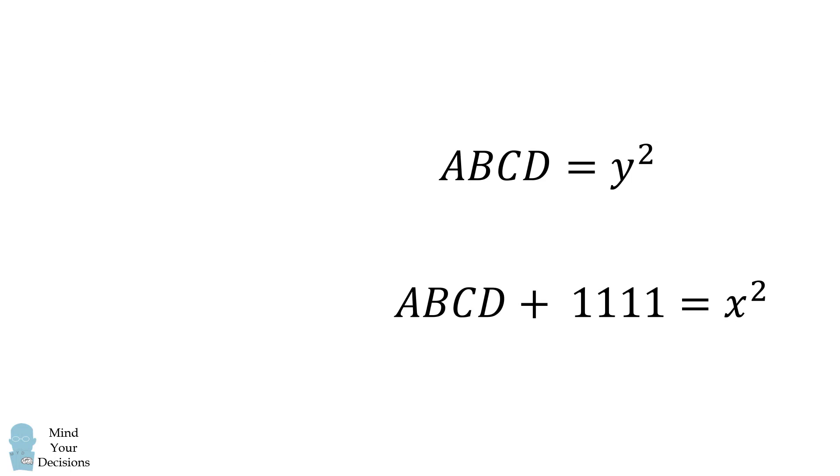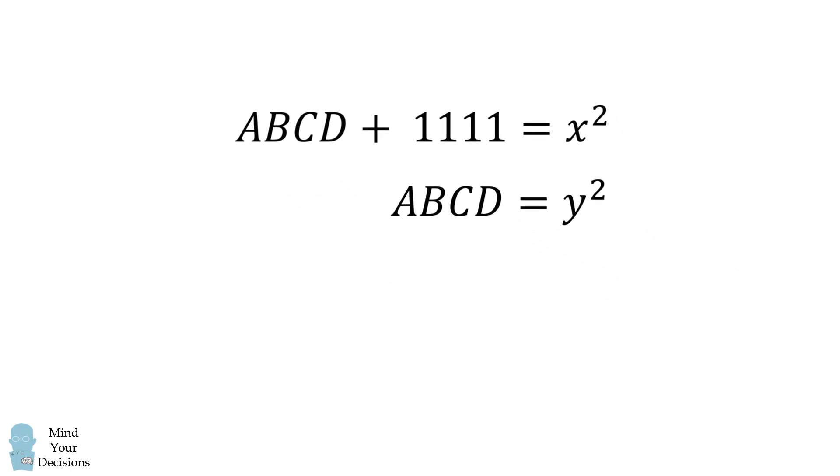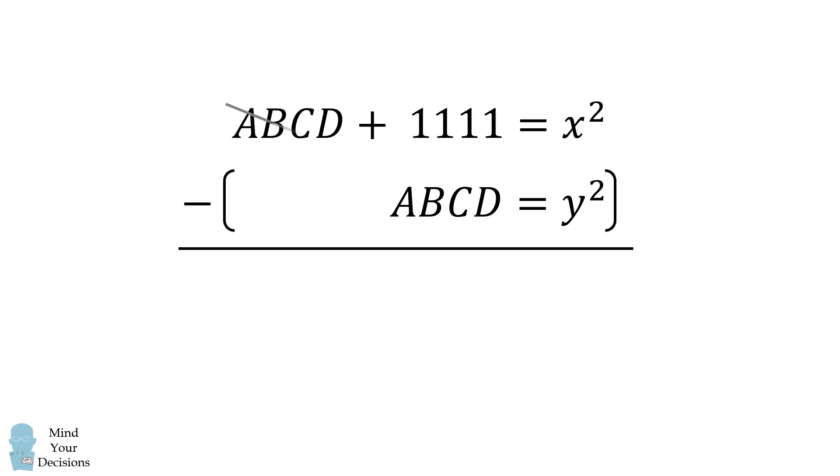Now consider these two equations. We will subtract the y squared equation from the x squared equation. When we do that, we will cancel out the four-digit number ABCD, and we get 1111 is equal to x squared minus y squared.